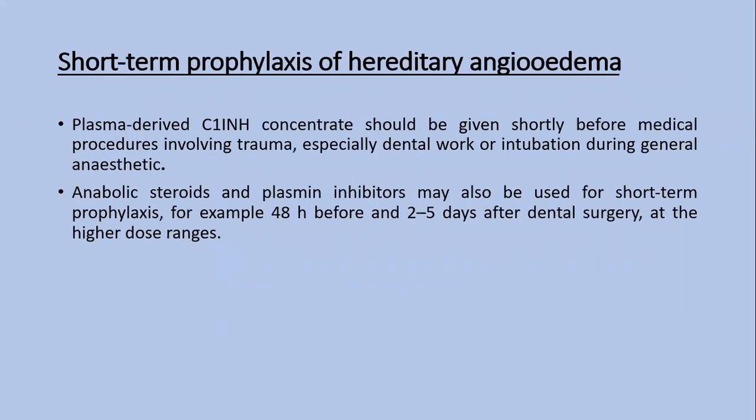Short-term prophylaxis of hereditary angioedema: plasma-derived C1 inhibitor concentrate should be given shortly before medical procedures involving trauma, especially dental work and intubation during general anesthesia. Anabolic steroids and plasma inhibitors may also be used for short-term prophylaxis — for example, 48 hours before and two to five days after dental surgery at high doses.